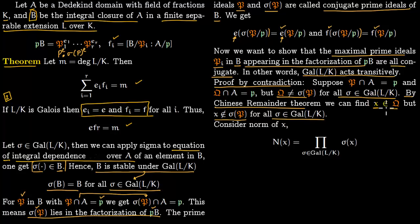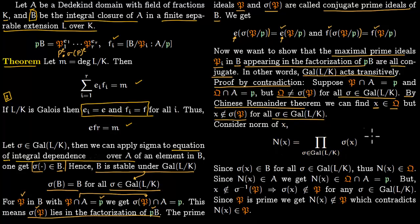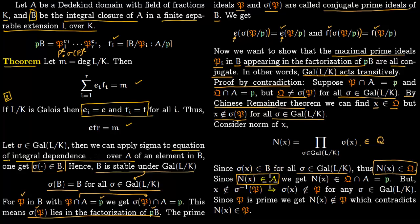Using the Chinese Remainder Theorem, pick x in the prime ideal Q such that x does not lie in any of the σ(P)'s. Now consider the norm of x, which is the product of σ(x) over all σ in the Galois group. Each σ(x) lies in B. In particular, the identity map is one of the σ's, so norm(x) lies in Q. Also, norm(x) lies in A because A is a Dedekind domain and integrally closed. So norm(x) lies in Q ∩ A = p.